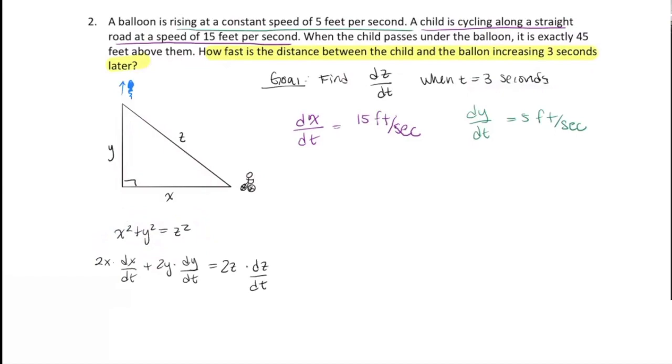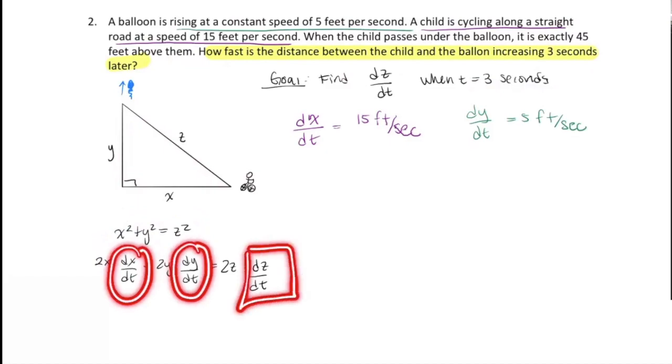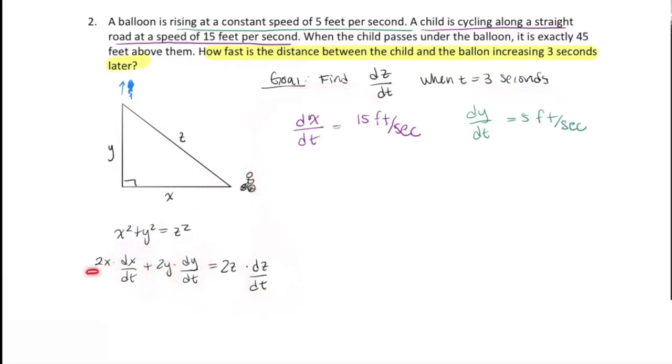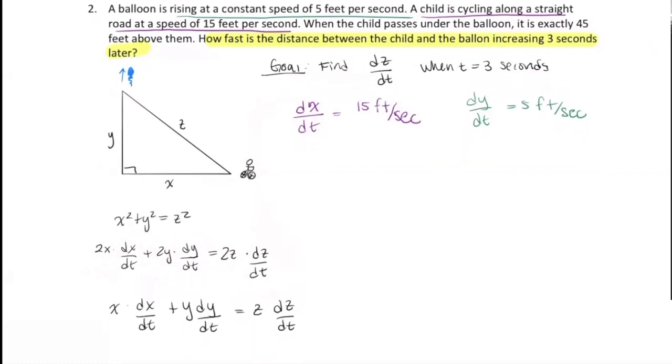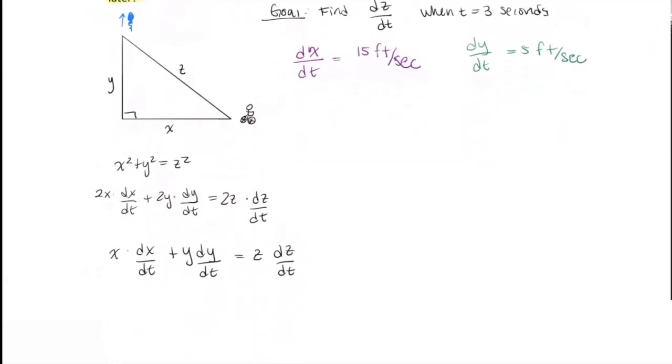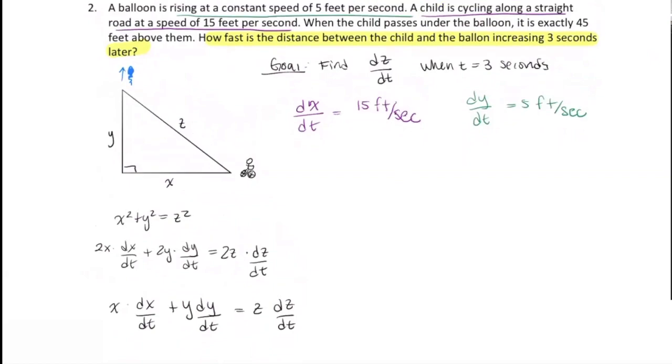Let's use implicit differentiation. And we will get 2X times dX/dt plus 2Y times dY/dt equals 2Z times dZ/dt. Let's match up what we're given and what we have. We know what dX/dt is, we know what dY/dt is, and this is our goal, to find dZ/dt. Now, everything is multiplied by 2, so we can easily divide that out.